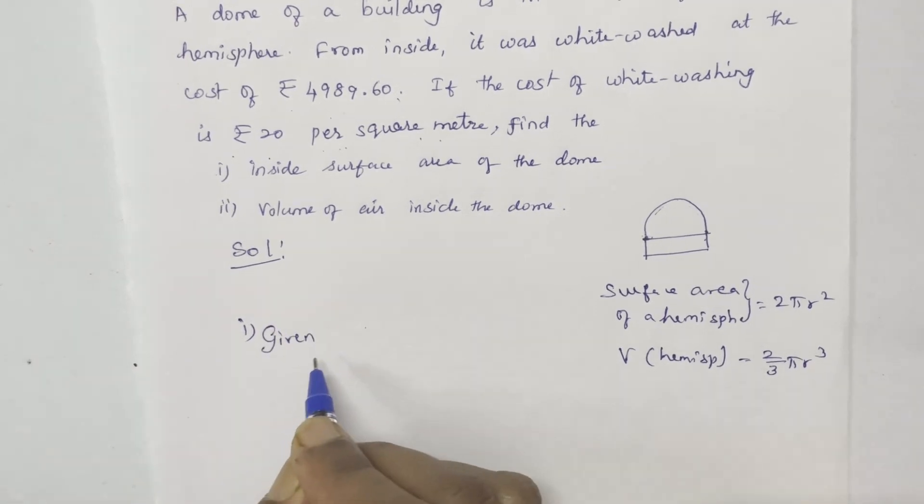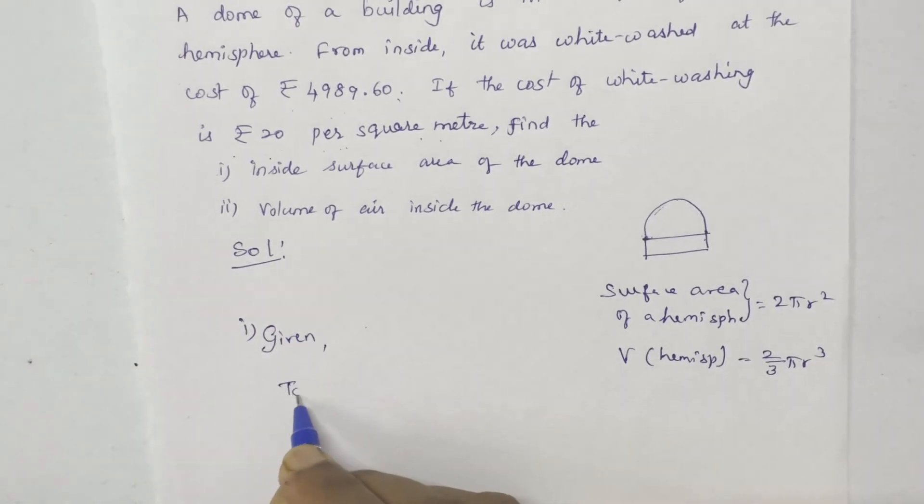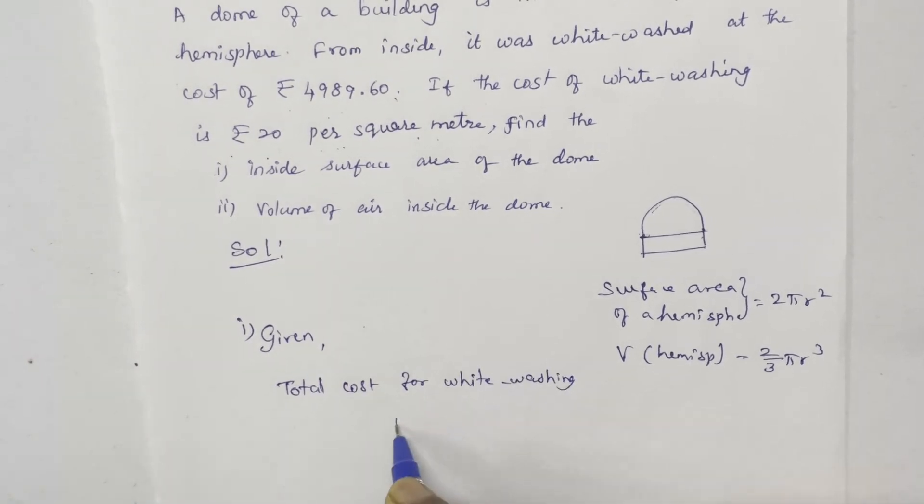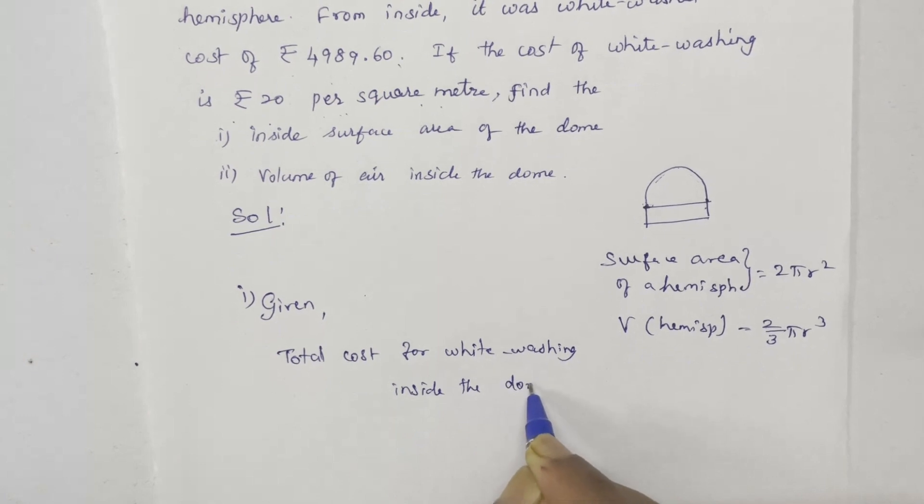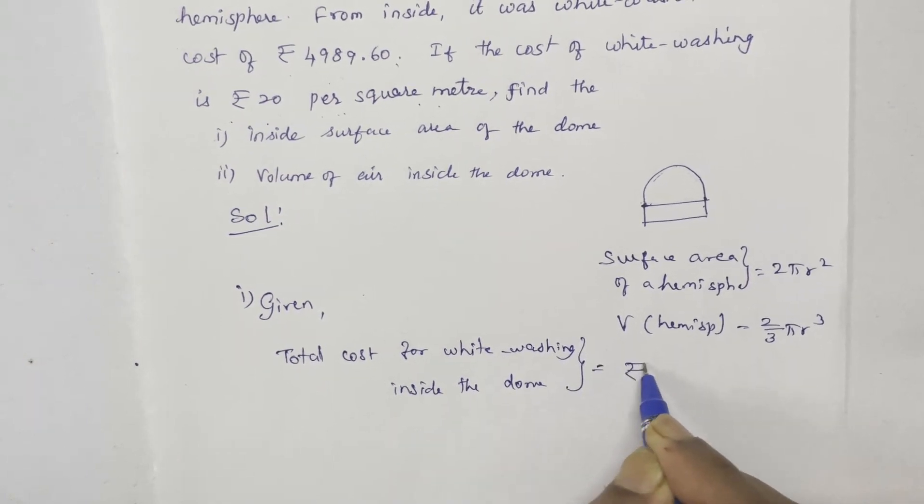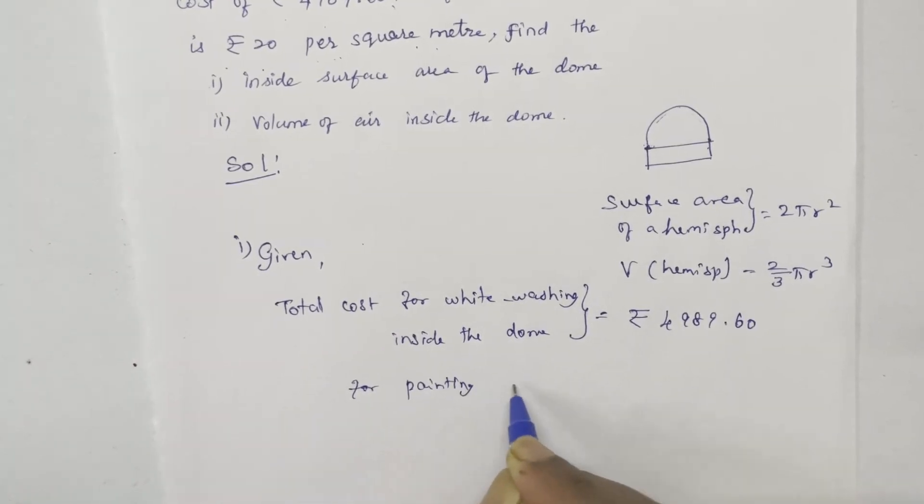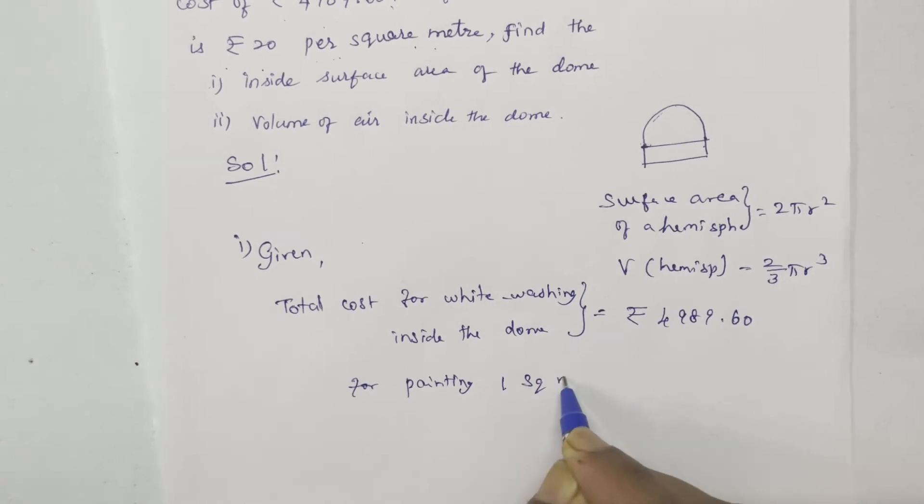Given: the total cost for whitewashing is Rs. 4989.60. For painting 1 square meter, Rs. 20.